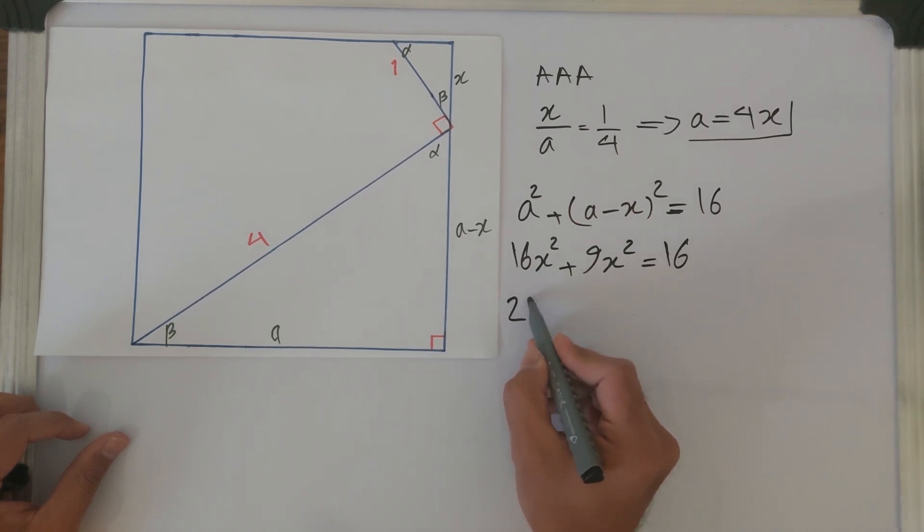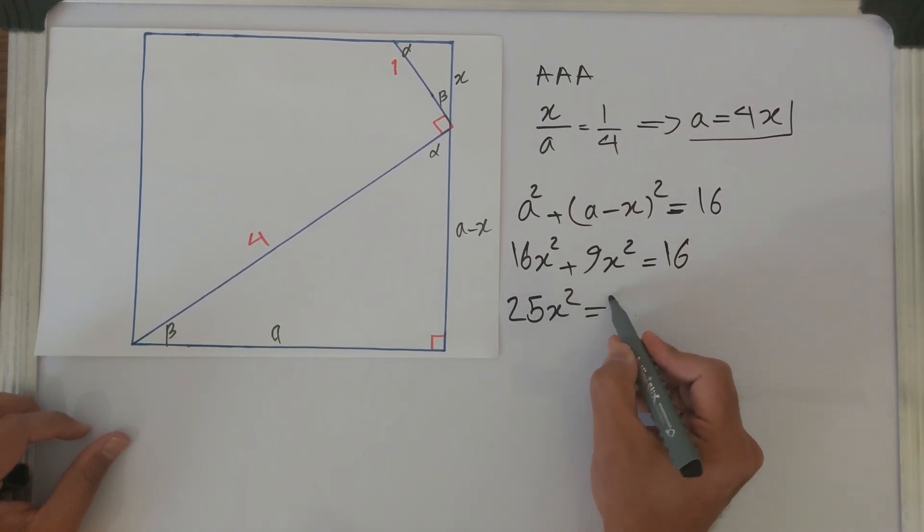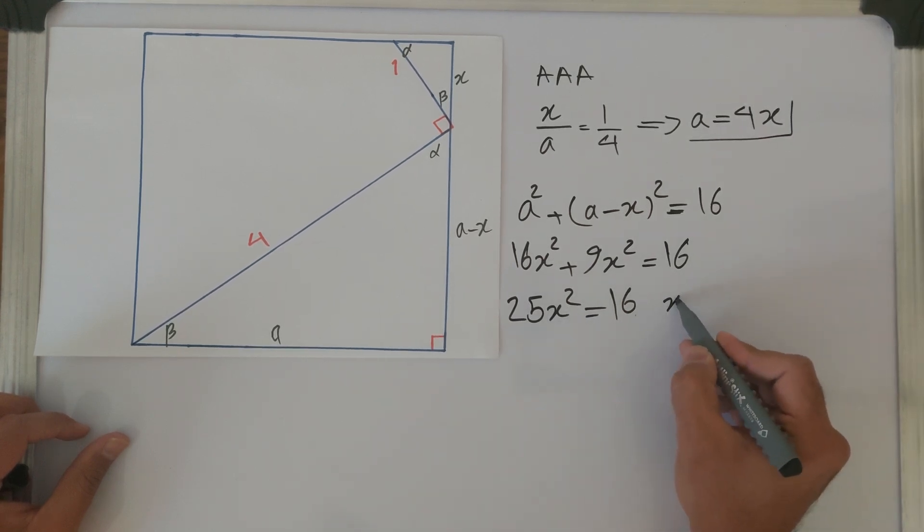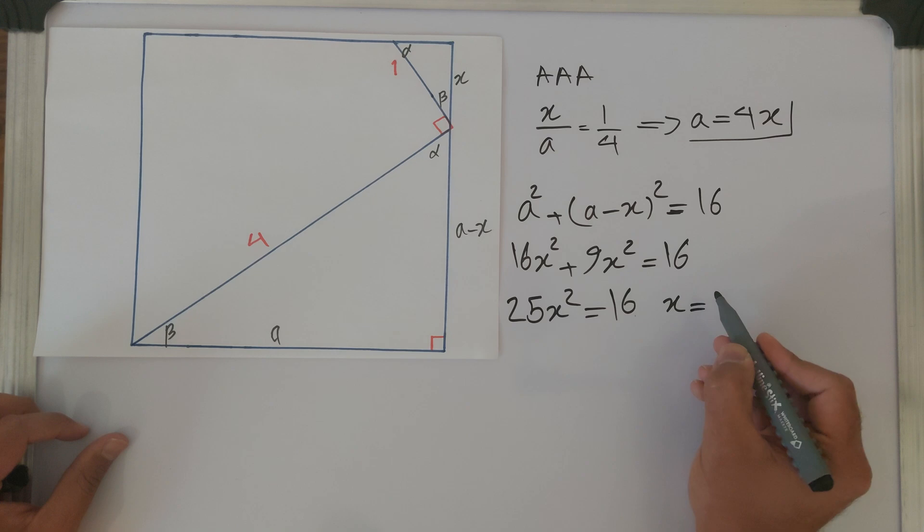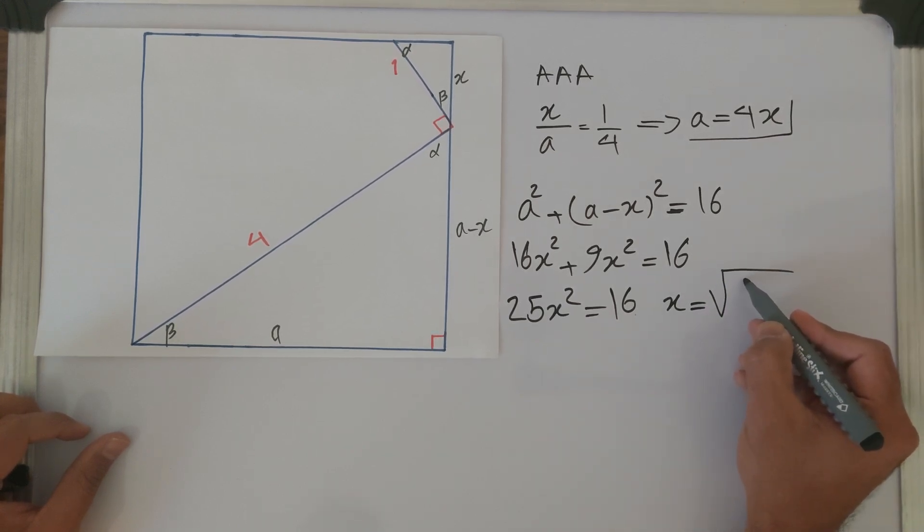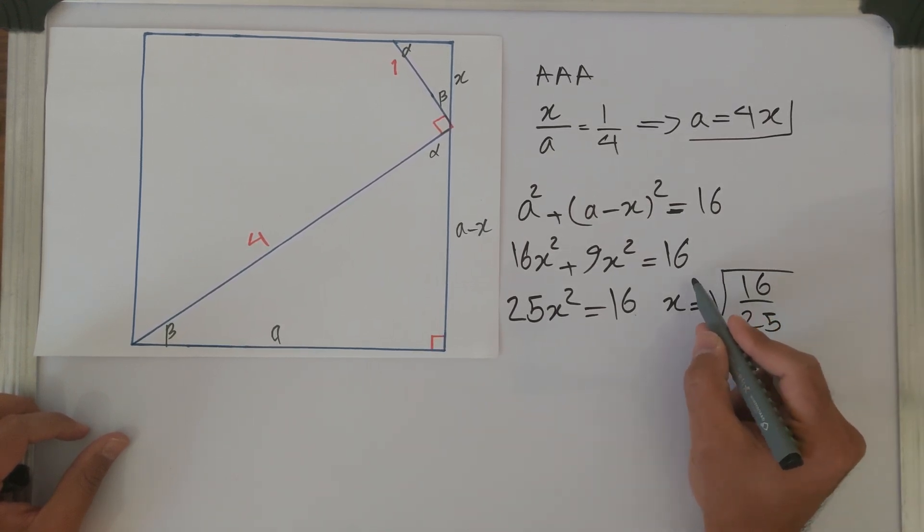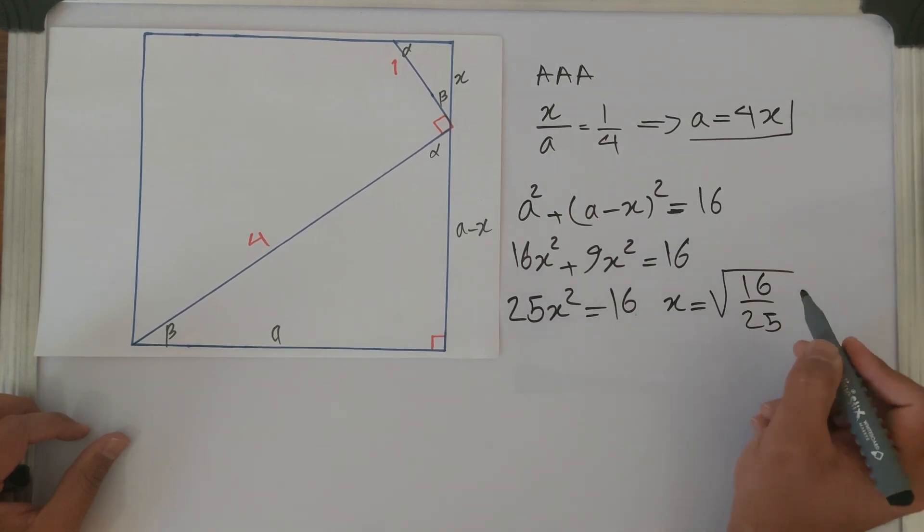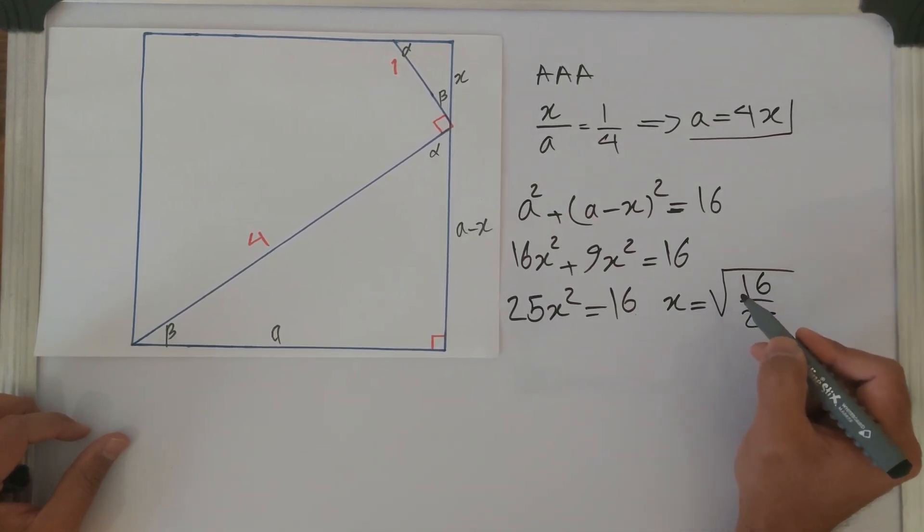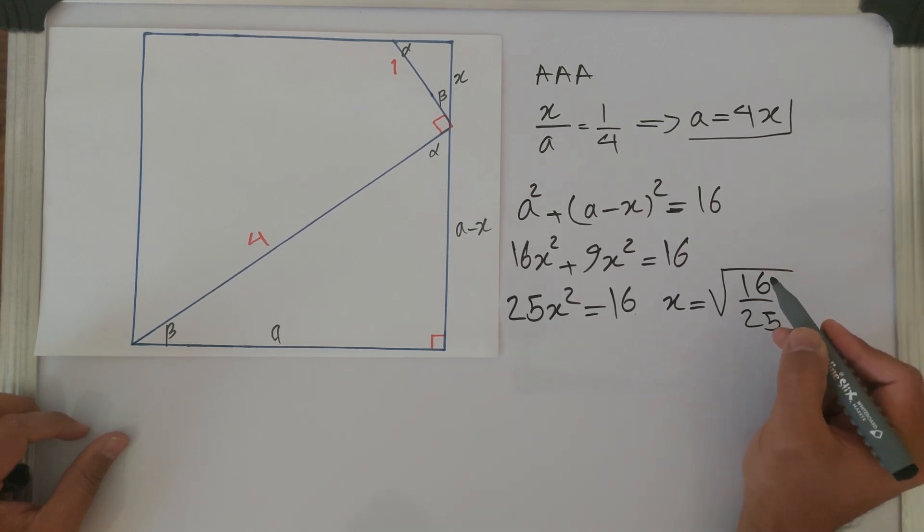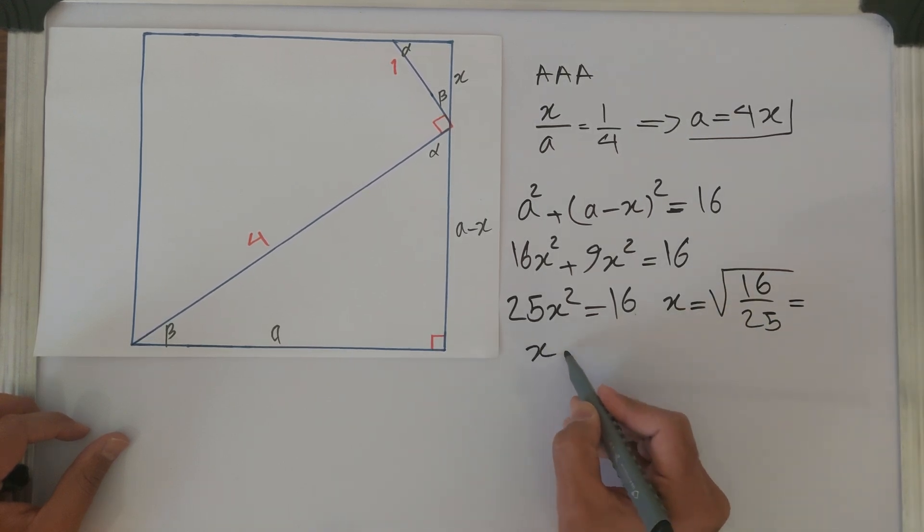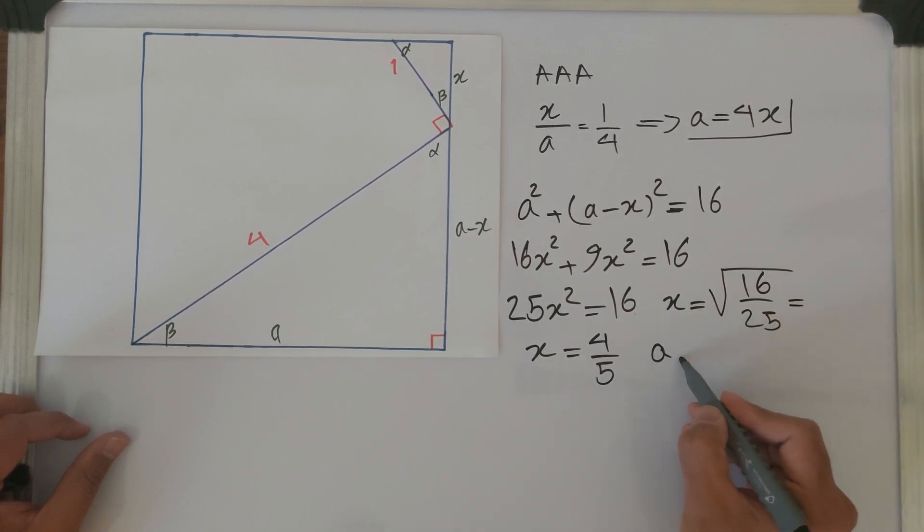Based on this, let's simplify that. 25x squared equals 16. In other words, x equals the square root of 16 over 25. Of course in calculus it is plus minus, but now we are in geometry phase, so the negative dimension or size is meaningless. We just consider the positive value, so x equals 4 over 5. Now a equals 4 times x, which is 16 over 5.